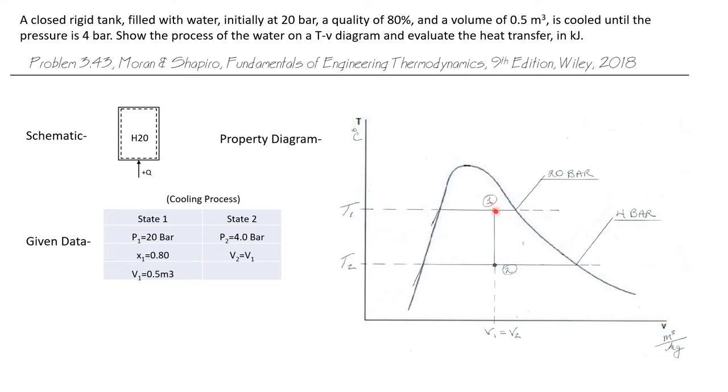This process takes place in a rigid tank, so the volume cannot change. It's a closed system, so the mass cannot change. Therefore, the specific volume cannot change. So this process has to take place on a vertical line. I know it's a cooling process where the pressure at state 2 is 4 bar, which is less than 20 bar. So I'm going to draw my 4 bar pressure line here. State 2 is going to be on that pressure line directly underneath state 1. So both of these states are saturated mixtures. I know the quality of state 1, but I do not know the quality of state 2.